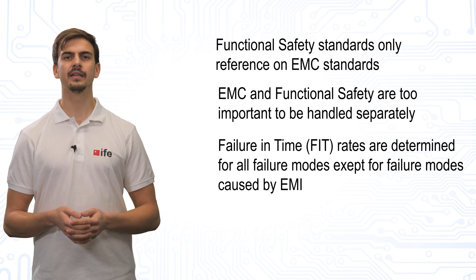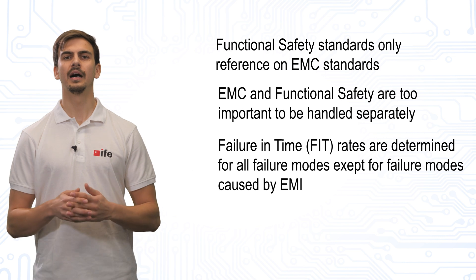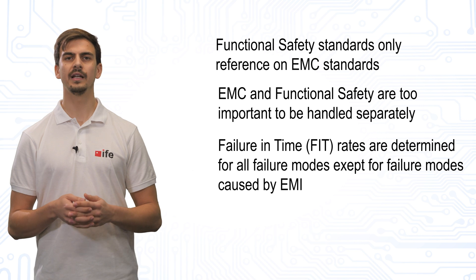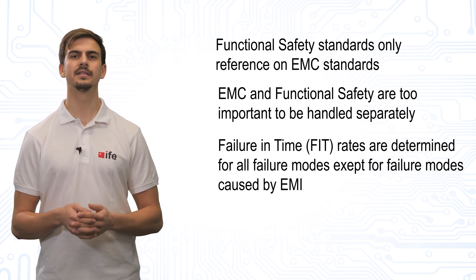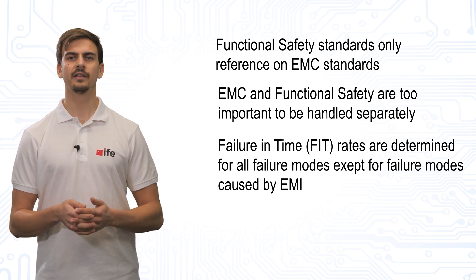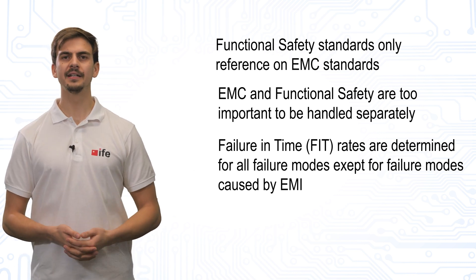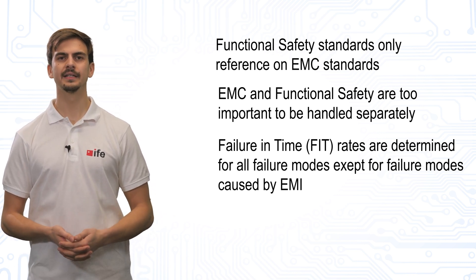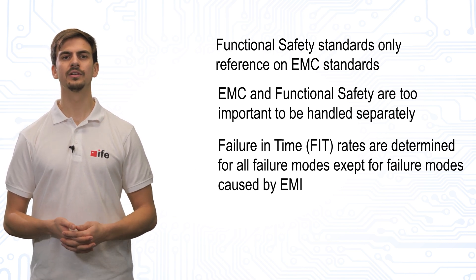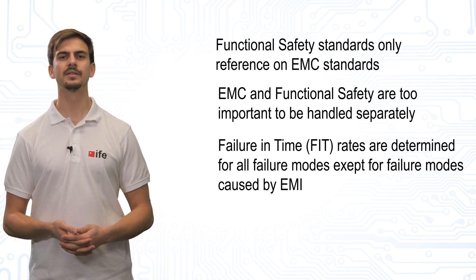Sources of electromagnetic emissions are usually considered under the worst-case assumption, as if they were always present. Interferences that lead to failures of the system are therefore treated as systematic errors. In a probabilistic view, such systematic faults have a probability of 1. If an IC fails to meet the required test levels, countermeasures such as adding additional protection or filter components must be taken until the required EMC test values are achieved.